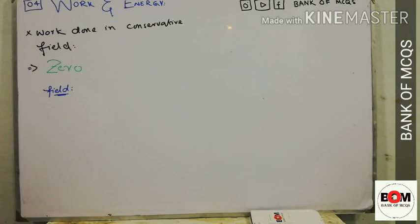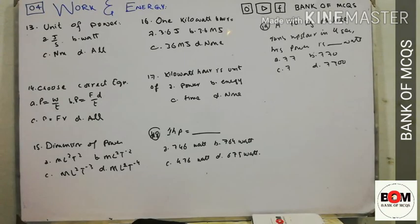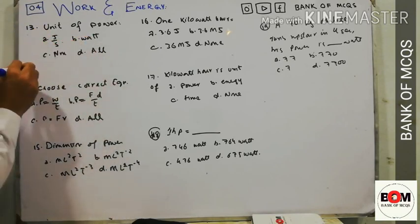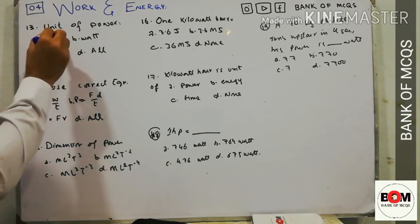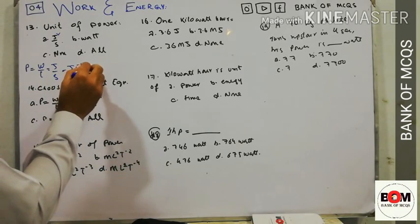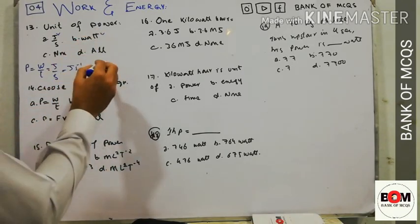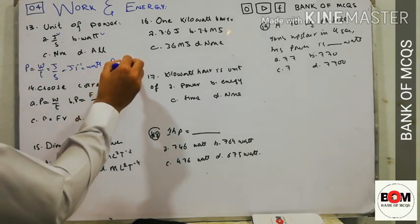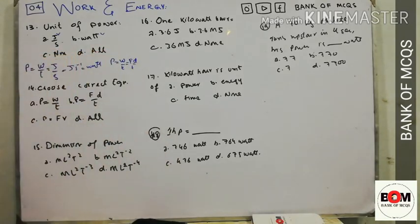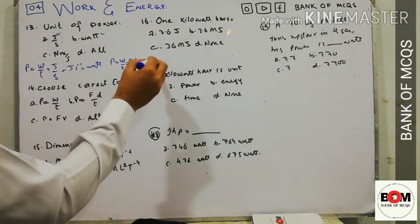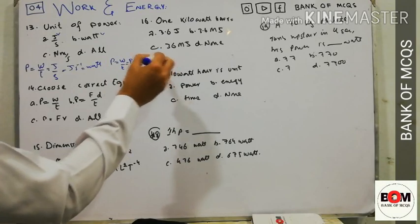MCQ on units of power: P = W/t, W is in Joules and t is in seconds, so Joule per second is the unit of power. Joule per second also equals Watt. Additionally, P = W/t = F·d/t = F·v = Newton·metre per second. So all given options are correct — option D.